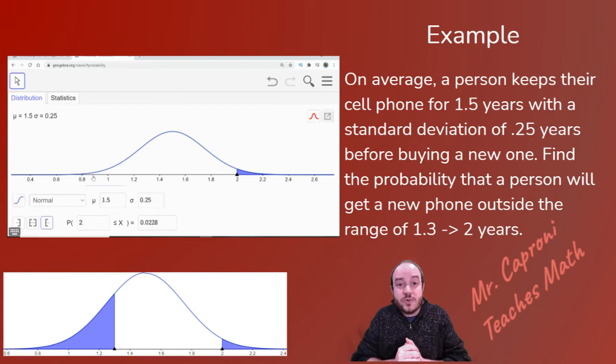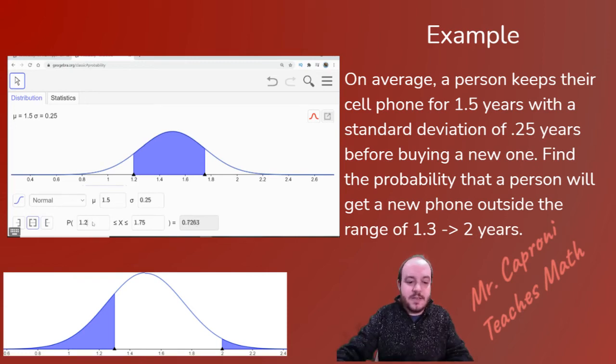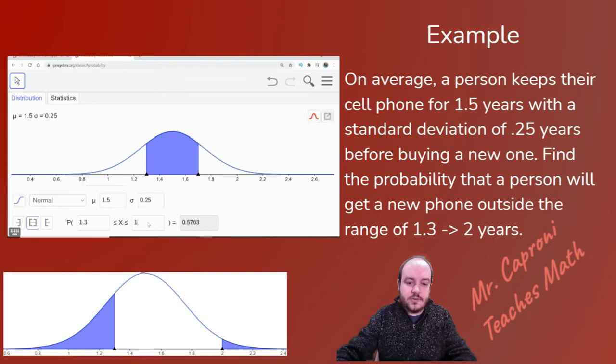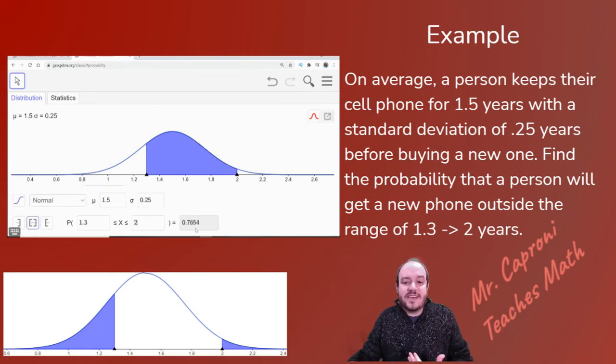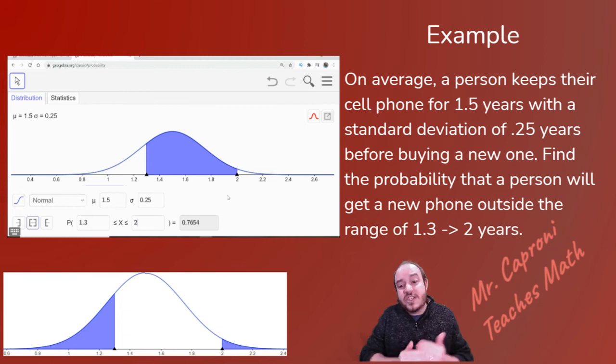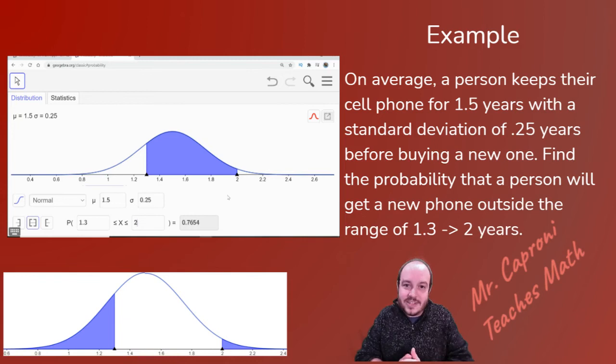A second way you could do a question where it has the outside wings like this is to go ahead and hit the in-between. And we could change this from in-between 1.3 to 2 in this case and hit enter. And that tells us 0.7654. Now, that's from here to here. So if I want to know outside of that, conveniently, we know that this whole curve adds up to 1. So if I just do 1 minus 0.7654, that's going to give me my answer.